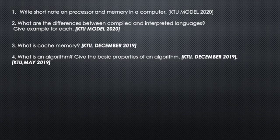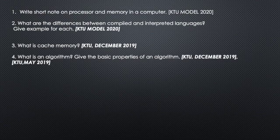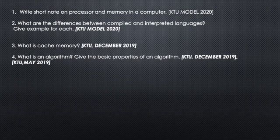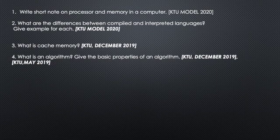We have a video about this. The next topic: what are the differences between compiled and interpreted languages? Compiled language means compilation. We have to compile a program and convert it into machine code. Examples of compiled languages include C, C++, etc.